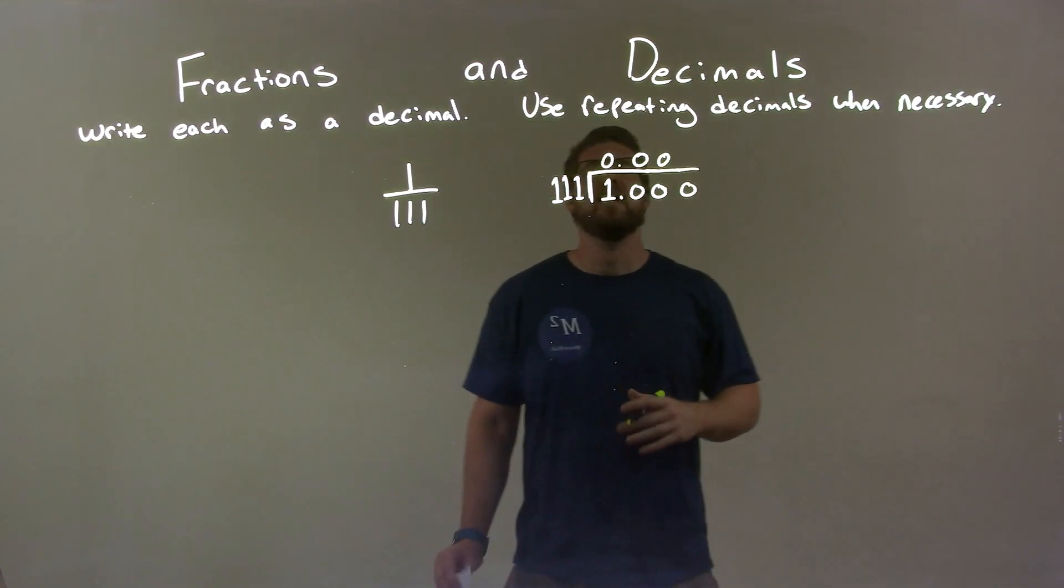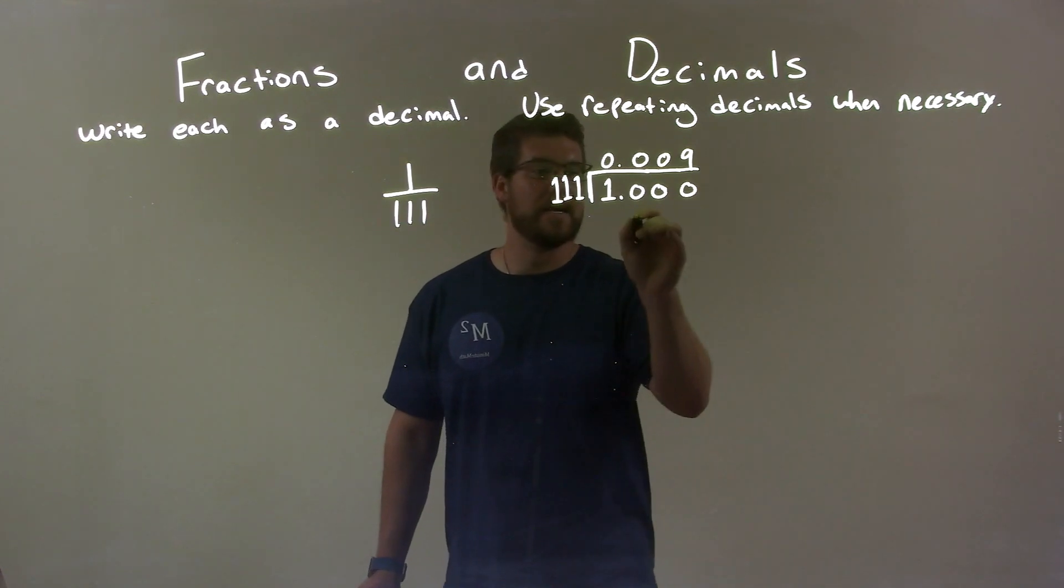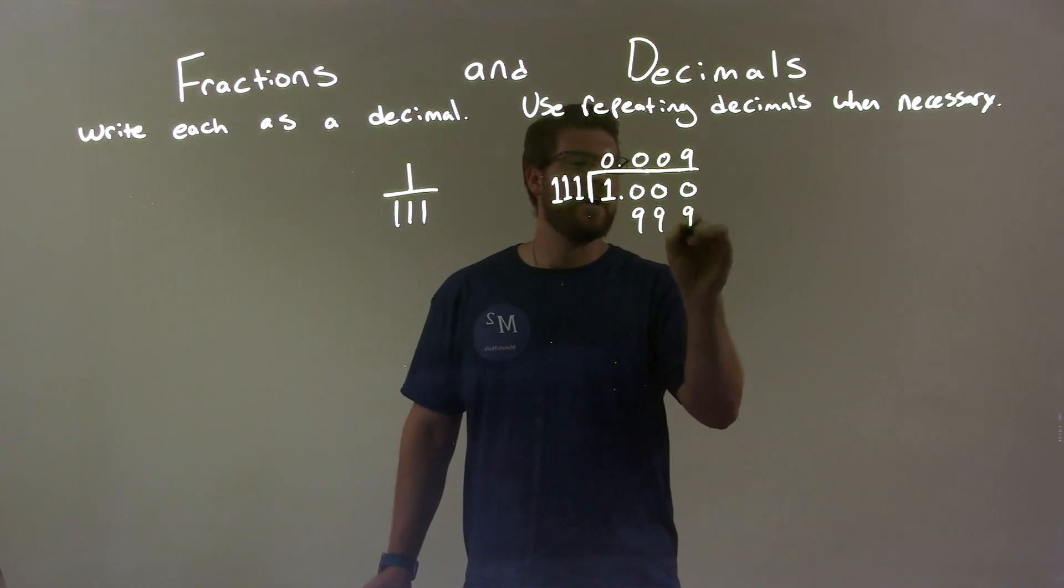Now we have 1,000. 111 goes into 1,000 the highest we can get is times 9, right? 9 times 111 is 999. So we have 999. Well, 1,000 minus 999 is 1.